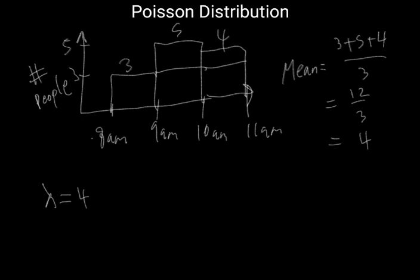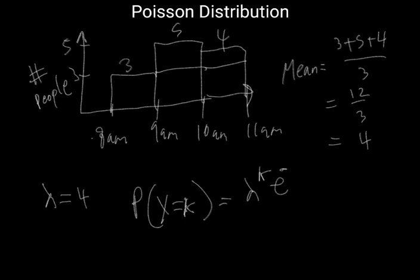The Poisson distribution gives us the probability of witnessing a certain number of events — k number of events — given that the mean is 4. This probability is given by the formula: the probability of x equals k is given by lambda raised to the k, times e raised to the minus lambda, over k factorial. This is the general equation.